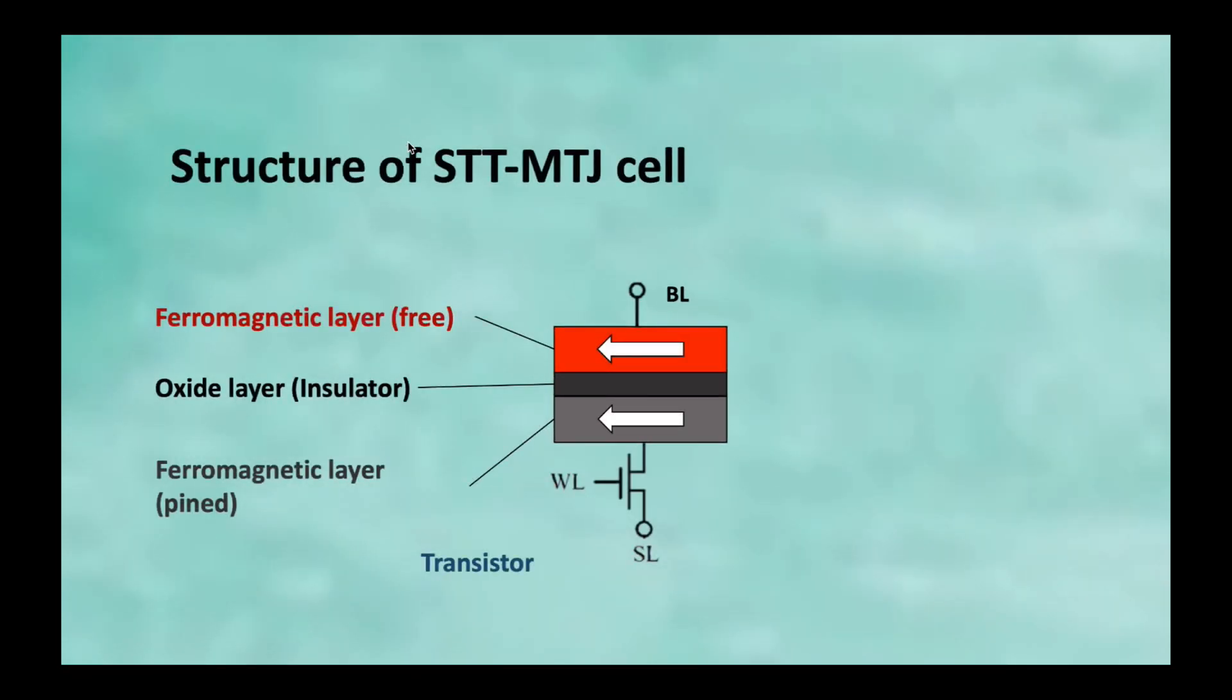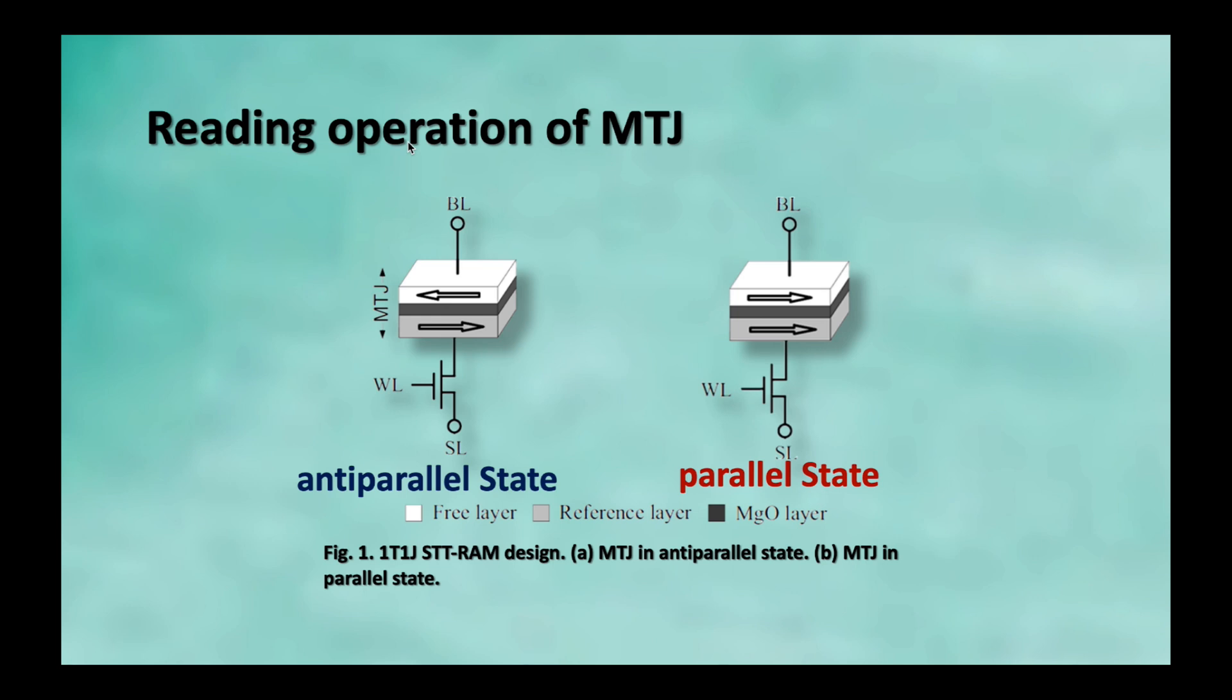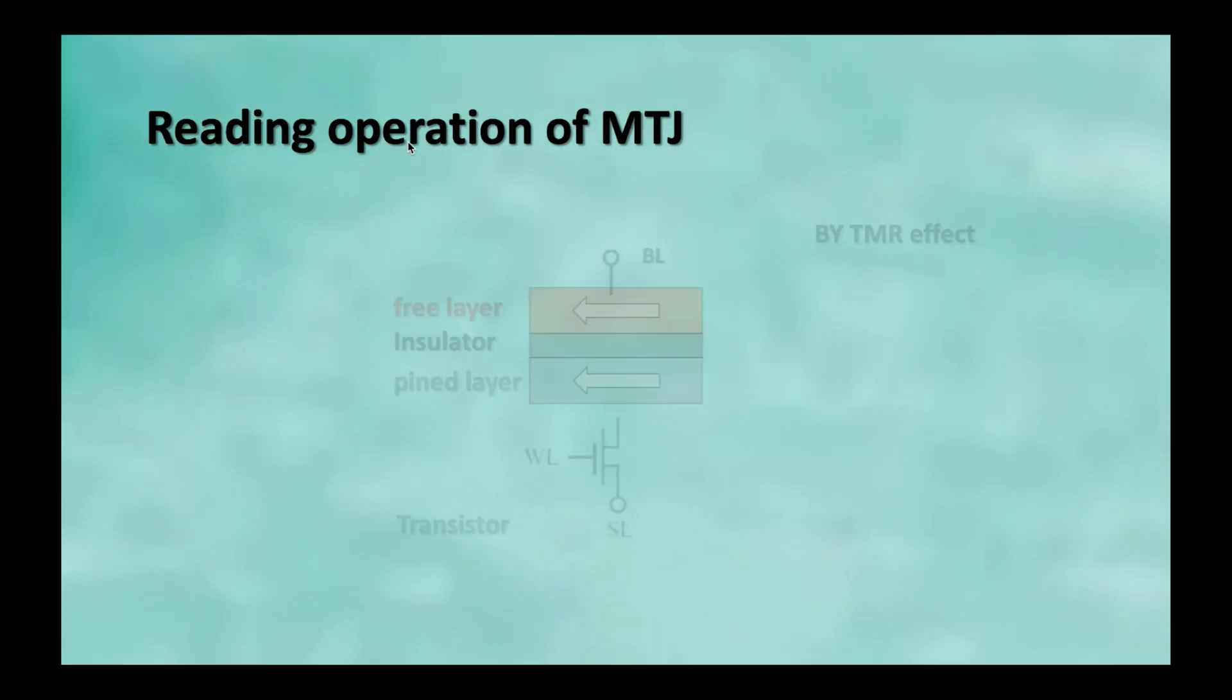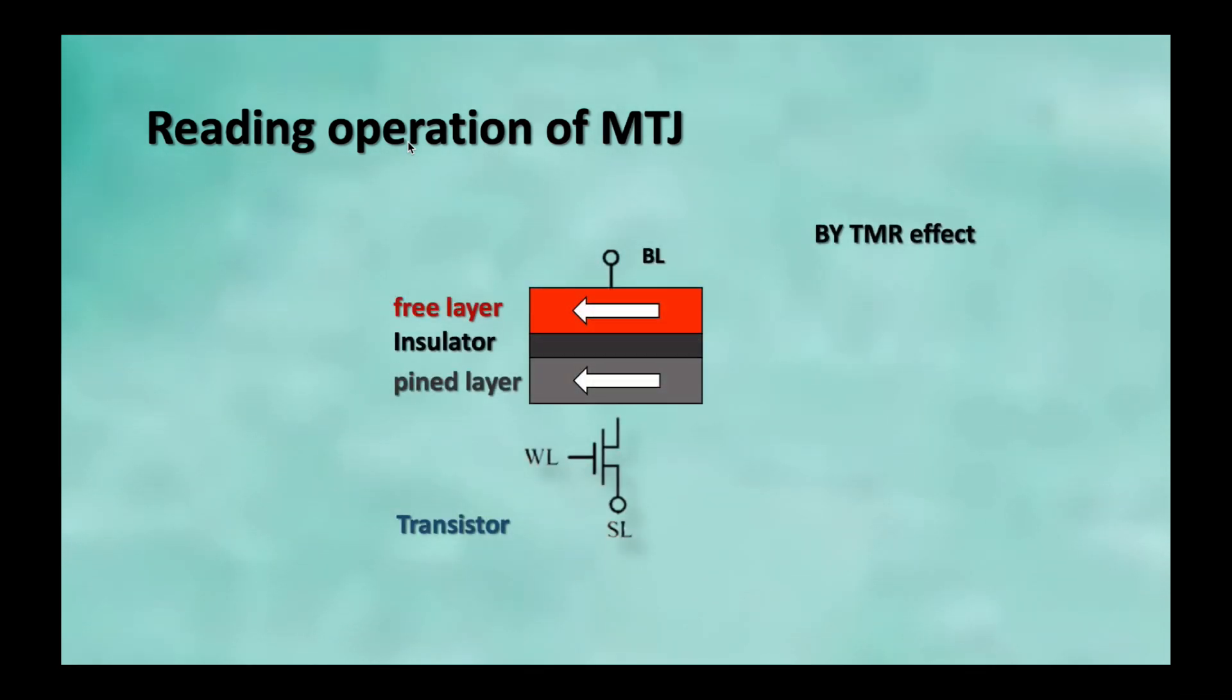For STT writing type of MTJ, it's a two-terminal device. The picture shows here is called 1T1J structure, where T is for transistor and J is for magnetic tunnel junction. Moreover, there is another type of writing mechanism called SOT. We will also discuss it later. You can see the cell structure is different from the previous one. It is a three-terminal device.